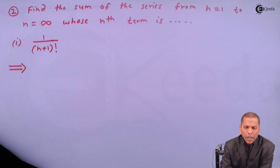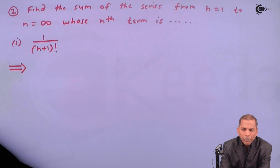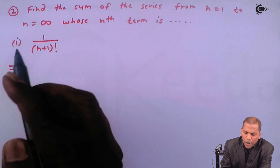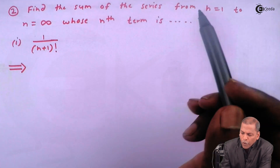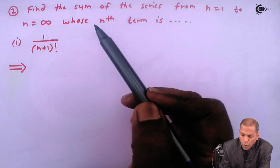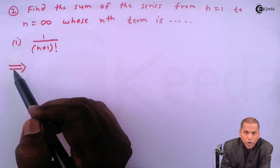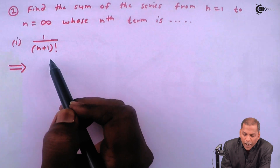Hello friends, now we see problem number two, sub-question one, which is based on the exponential series of the chapter Sequence and Series. The problem is: find the sum of the series from n equal to one to infinity, whose nth term for sub-question one is one upon n plus one factorial.